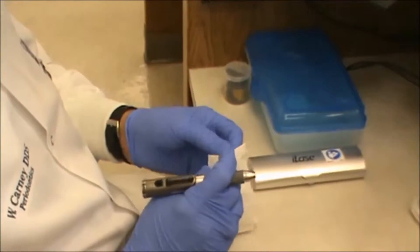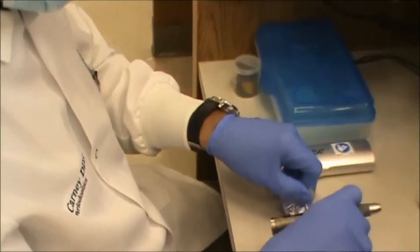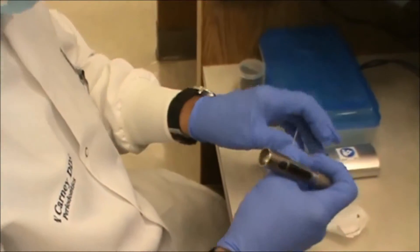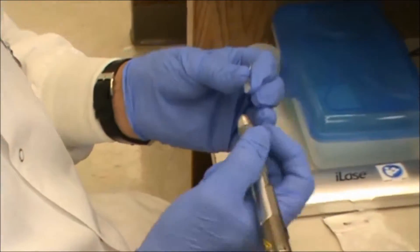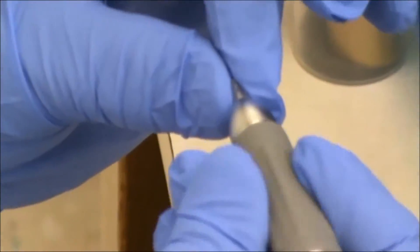Next, we want to place a disposable tip on the laser. It should be disposed of in the sharps container when you're done. Simply screws in to the front.